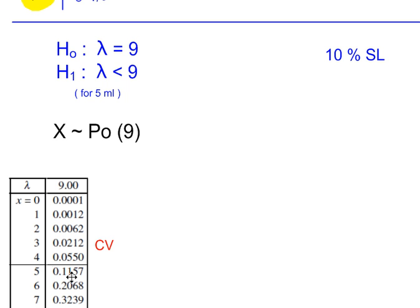But the next probability, 0.11, is more than 10%. So 5 onwards, these values are not in the critical region. So our critical value is 4.